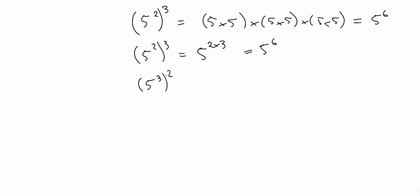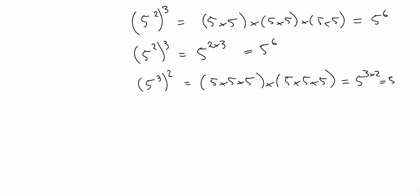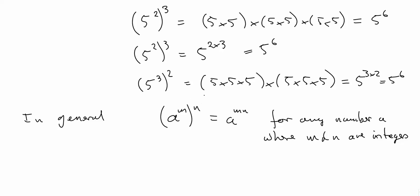If we evaluated 5 cubed squared, we'd get 5 times 5 times 5 multiplied by itself. Again, we have 6 lots of 5 multiplied, so that is 5 to the power of 6 — 5 to the 3 times 2. So in general, a to the m raised to the power of n is a to the m times n. And a can be any number, provided m and n are integers, whole numbers.